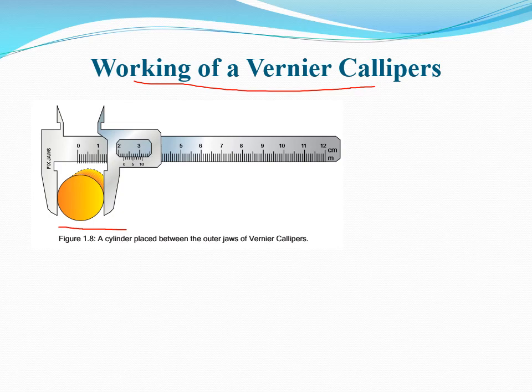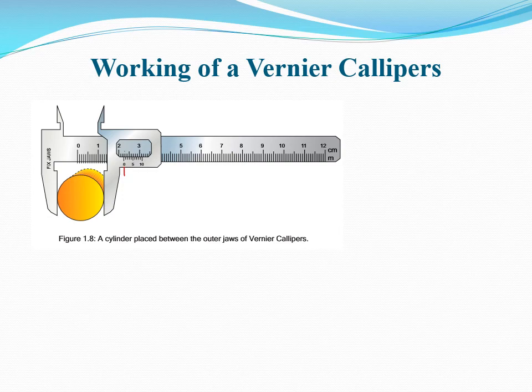Next, find the vernier scale division that is coinciding with any division on the main scale. Observing closely, we see that the 1st, 2nd, 3rd and 4th — this 4th division is just coinciding with a division on the main scale. Multiply this coinciding division by the least count of the Vernier Calipers and add the result to the main scale reading. The zero of the vernier scale is just passing the 2.2 cm mark.